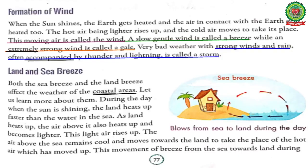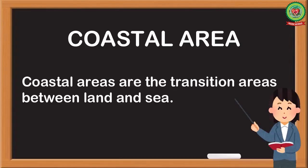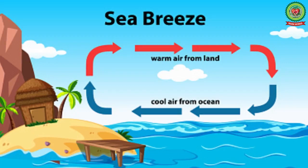Next is land and sea breeze. Both the sea breeze and the coastal land breeze affect the weather of the coastal area. Coastal areas are the transition area between land and sea. Let's firstly discuss about sea breeze.